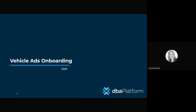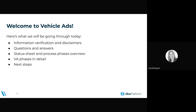Here's the agenda for today. We're going to go through a little bit of information — verification of all your account information and some disclaimers about the program, some questions and answers. We're going to show you the status sheet that we use along with our DBA platform to keep you informed of the status of all your locations. We'll talk about the phases of vehicle ads in detail, and then the next steps for getting your ads actually launched.